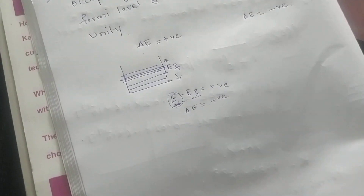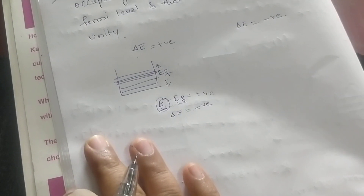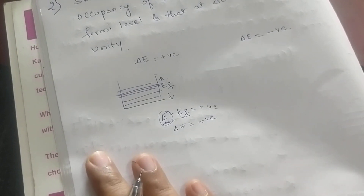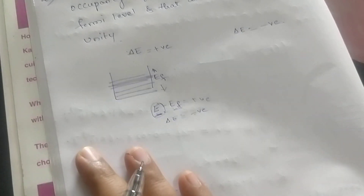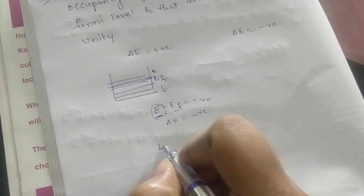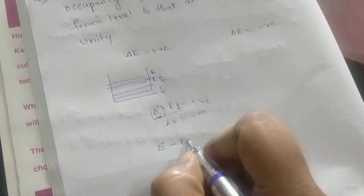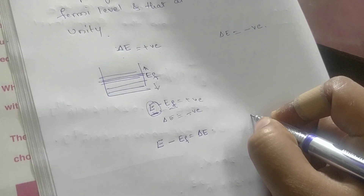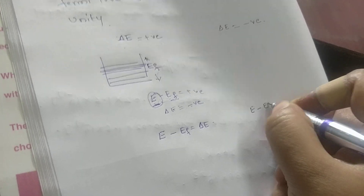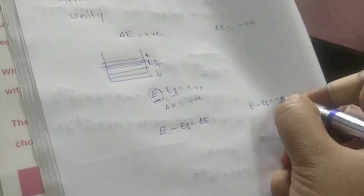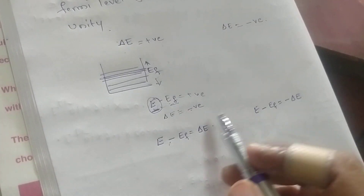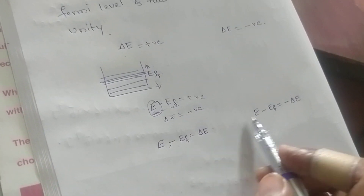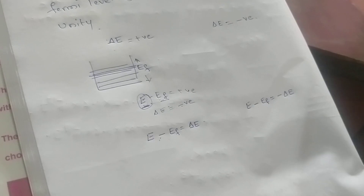So whenever I go below the Fermi level, it will be negative. The statement says: the sum of the probability of occupancy of energy states at delta E below the Fermi level and above the Fermi level should equal 1. Above the Fermi level, e minus ef equals delta E; below the Fermi level, e minus ef equals minus delta E. When you add f(E) for both values, you should get 1.